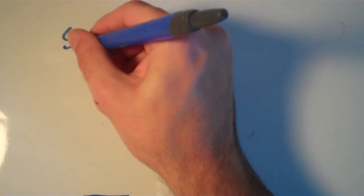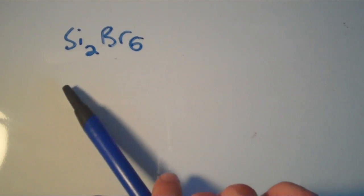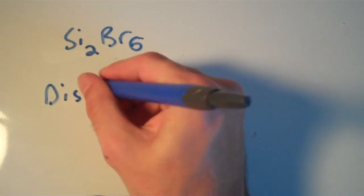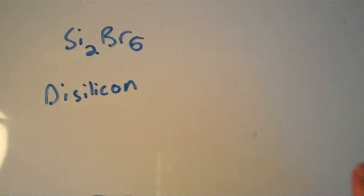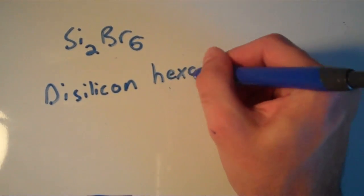So let's go through a couple more examples. Si2Br6. What is the name of this compound? We have silicon and we have bromine. We have two silicons, so that's going to be disilicon. And then we have six bromines, so this is going to be disilicon hexabromide.